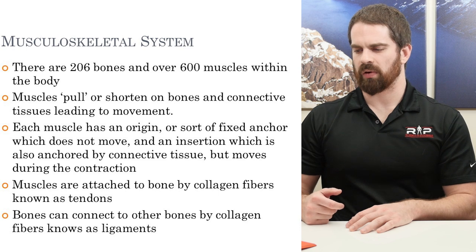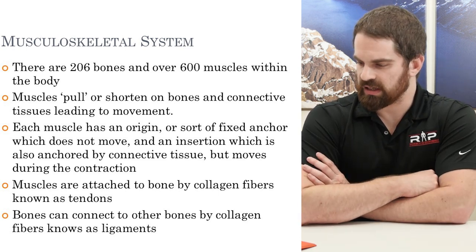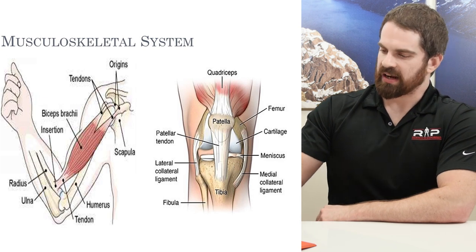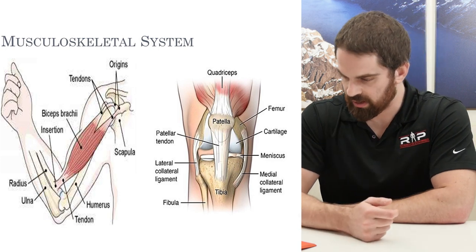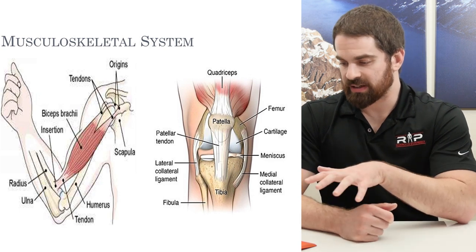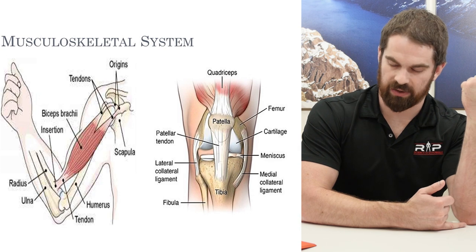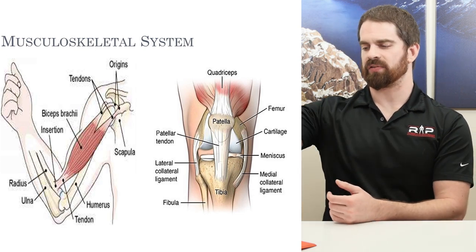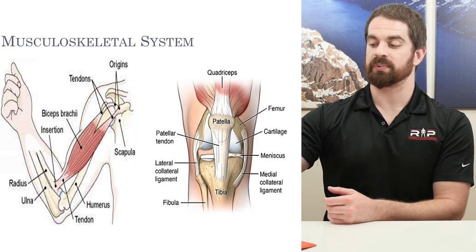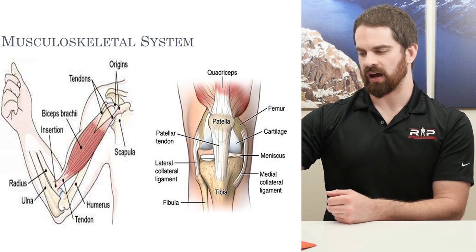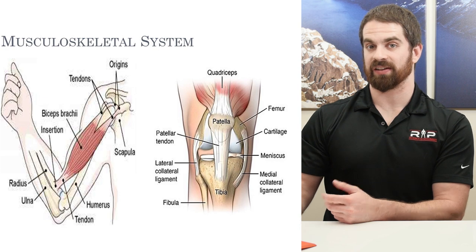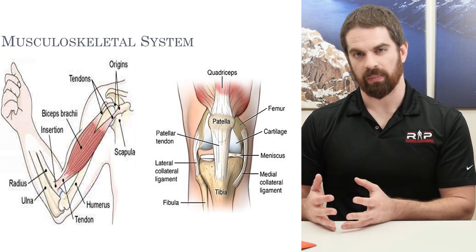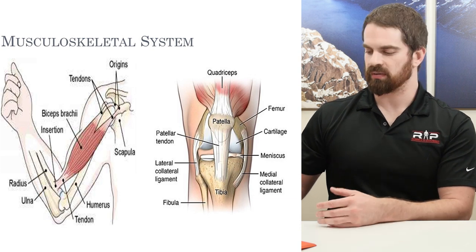Here's an example of the elbow joint showing the biceps brachii with origin and insertion, where tendons interact with the biceps muscle and insert on the radius. The knee joint is another great example — at the top we have the quadriceps, with the patellar tendon attaching the quadriceps to the patella, representing muscle-to-bone interaction. We can also see various ligaments holding the knee joint together through bone-to-bone interactions.